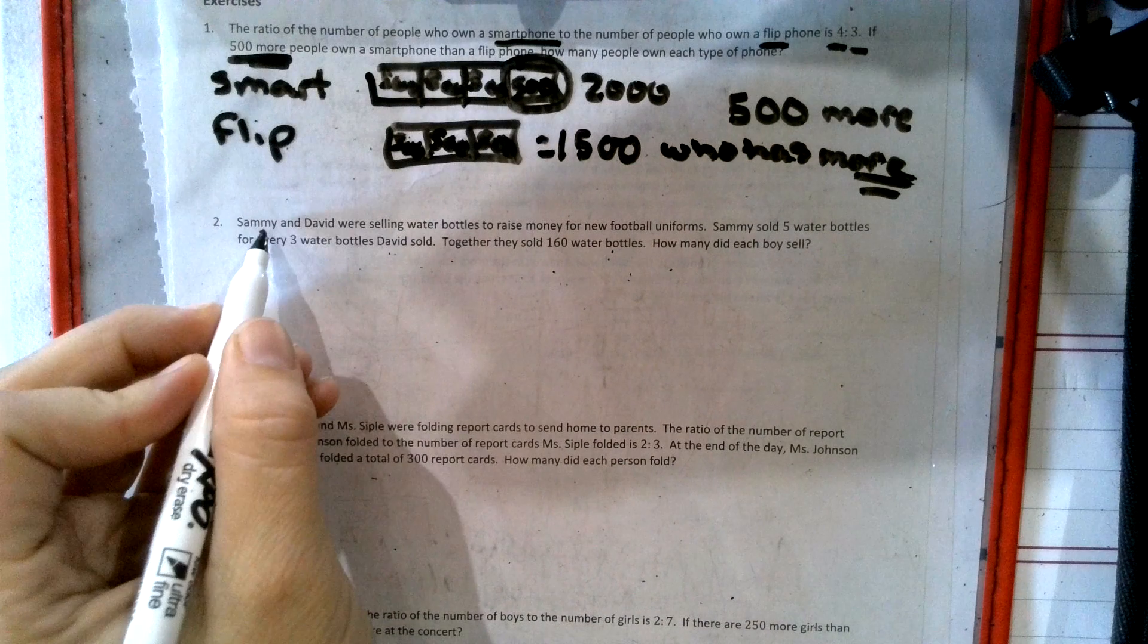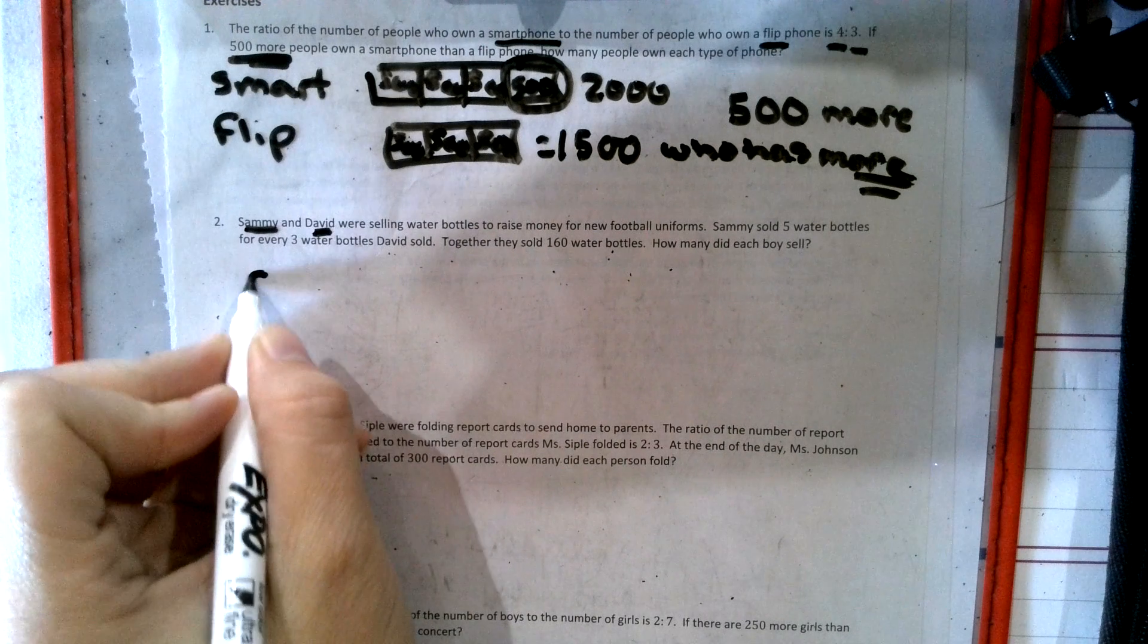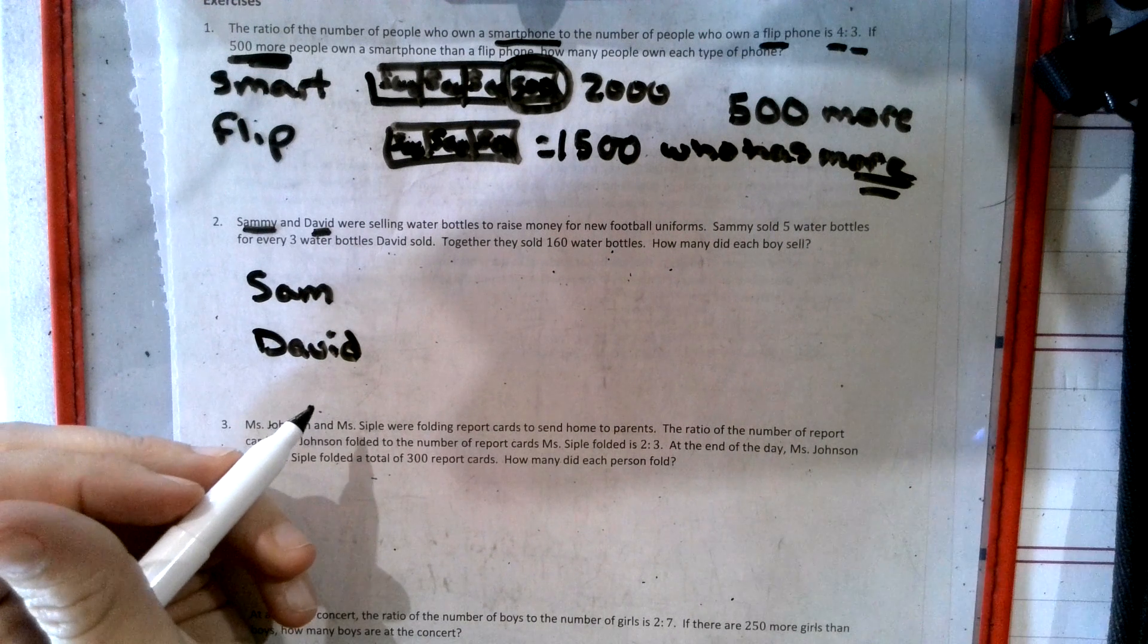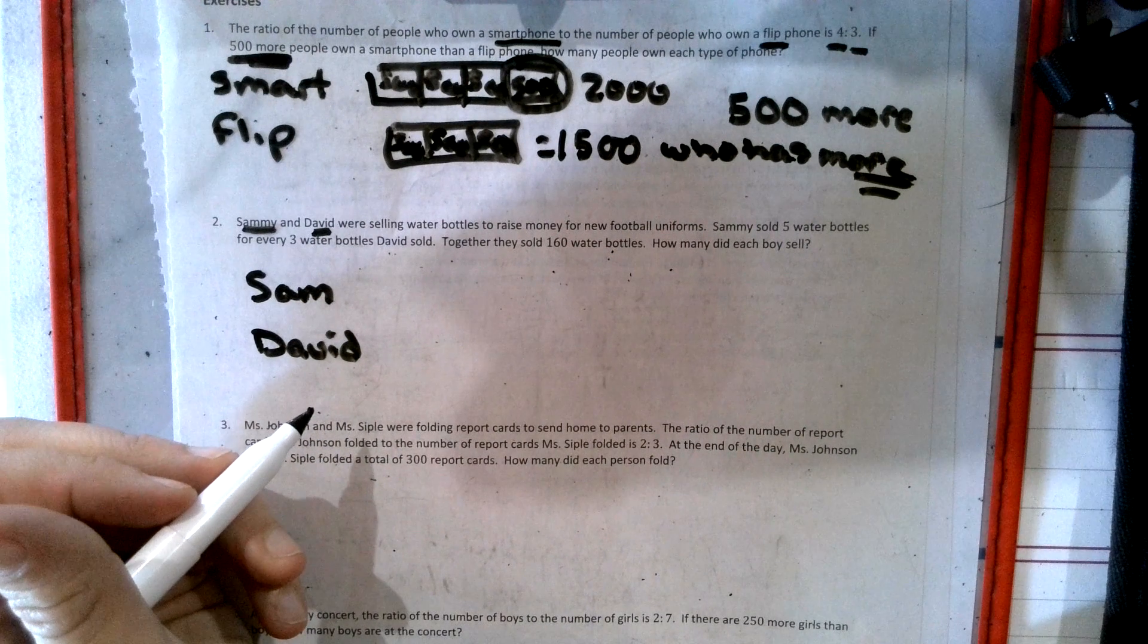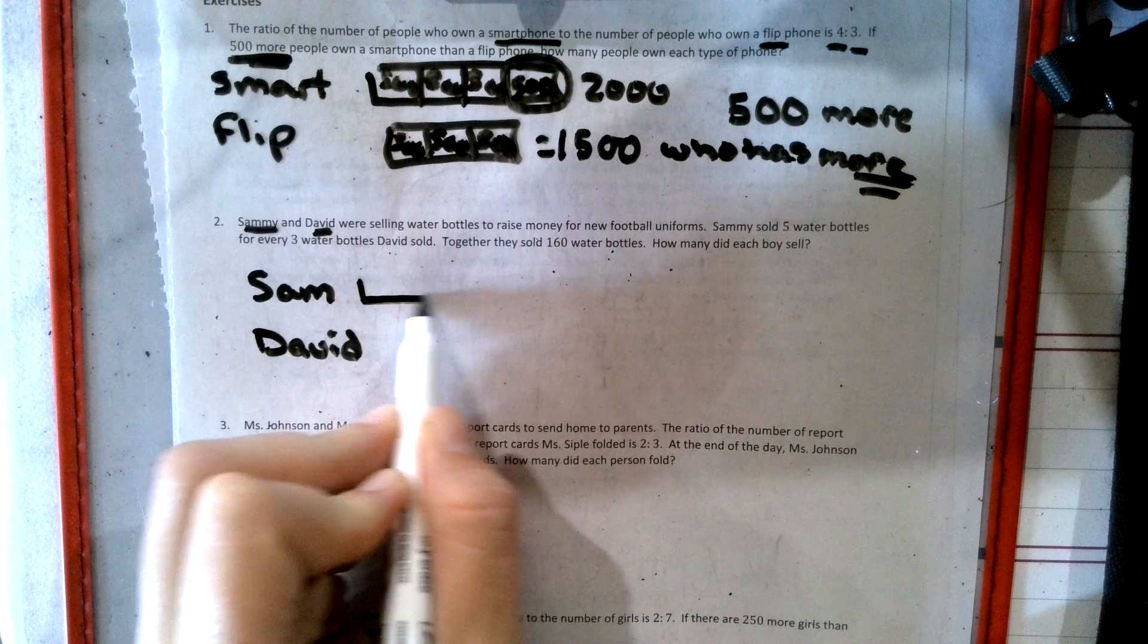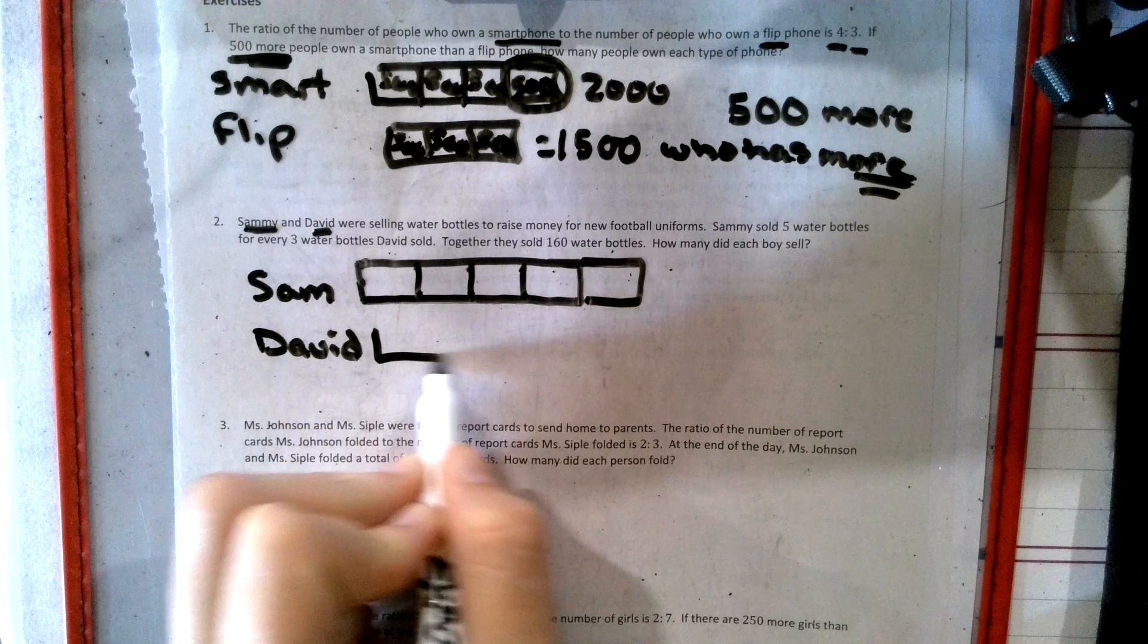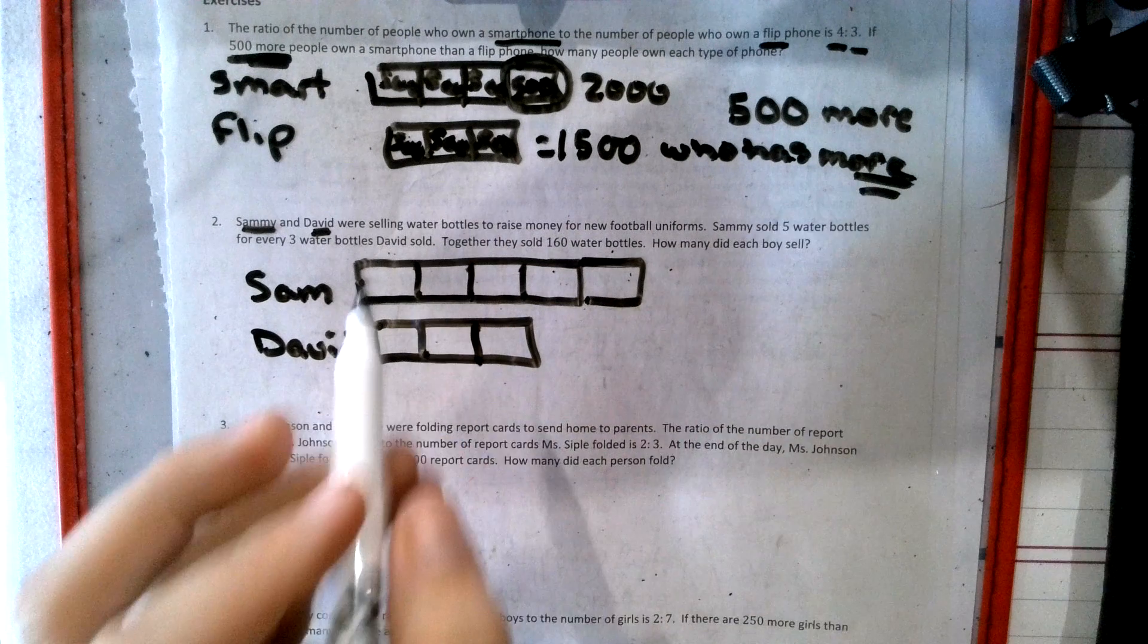So the people we were dealing with is Sammy and David. So we have Sammy. We'll put Sam and David. They were selling water bottles to raise money for new football uniforms. Sammy sold five water bottles for every three David sold. So that means Sammy sold five when Dave would sell three.